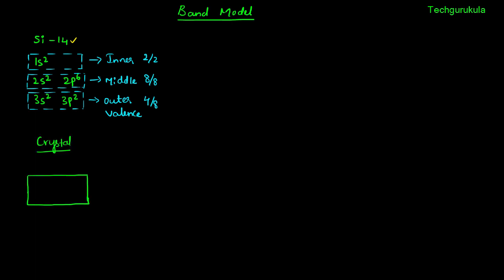Practically, silicon is used in crystal form. Consider a silicon crystal where the number of atoms is n and the neighboring atoms distance is r, which we call the interatomic distance. Given individual silicon atoms, the energy levels within are in the order: 1s, 2s, 2p, 3s, and then 3p. Our target is to determine what the energy levels for this silicon crystal of n atoms will be.